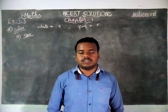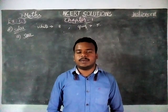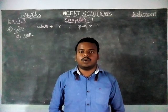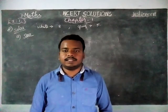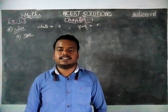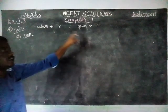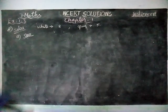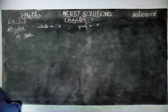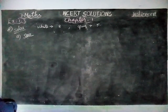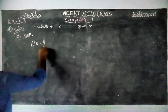Hi students, welcome to NCRT Solutions. In this video we are going to see 7th standard math, Exercise 1.3, question 8. A company is selling white cement and gray cement. White cement gives a profit of 8 rupees per bag, and gray cement gives a loss of 5 rupees per bag.